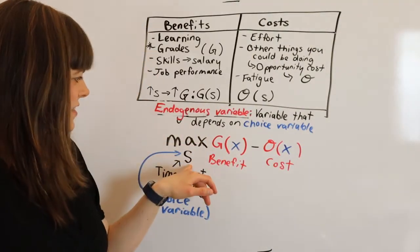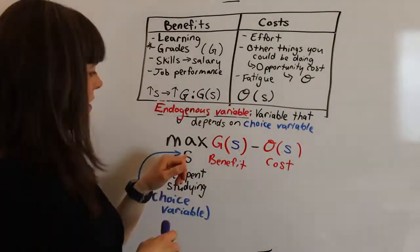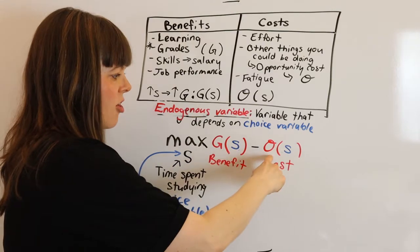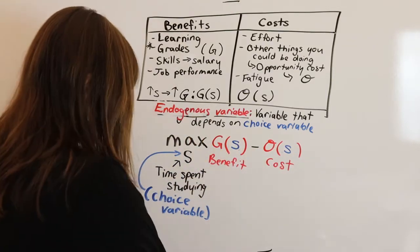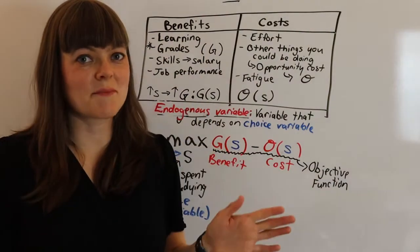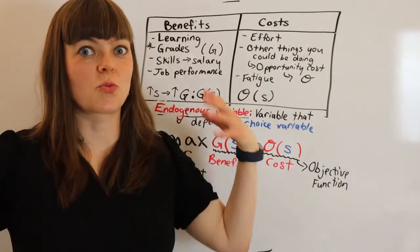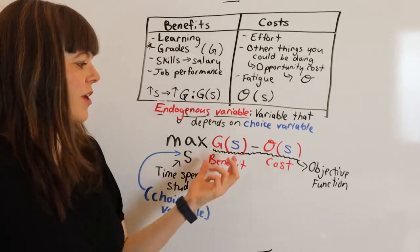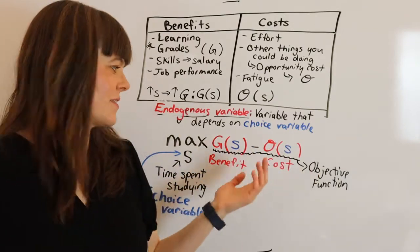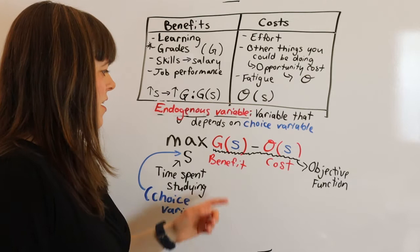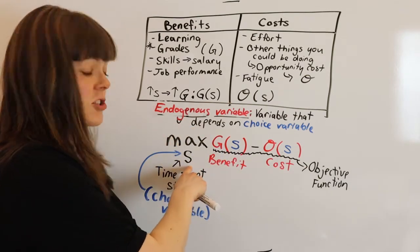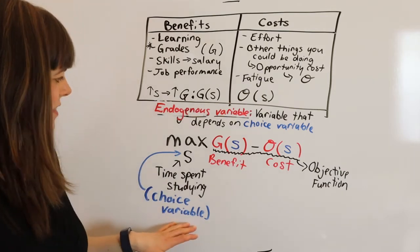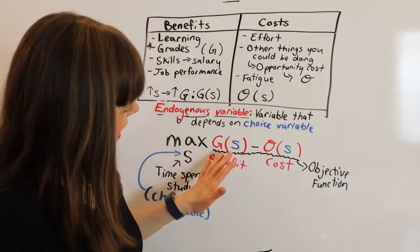All right. So we're maximizing our objective function, which is the thing we care about, our grades minus our opportunity cost. That's our objective function. Economists name things very intuitively. Our objective function is just what is our objective? What are our goals? When we're making this decision, what are the things we care about? And we care about, of course, good things and bad things and making good things bigger and making bad things smaller. And our objective function is a function of our choice variable. So another clearly named variable in the microeconomic model.